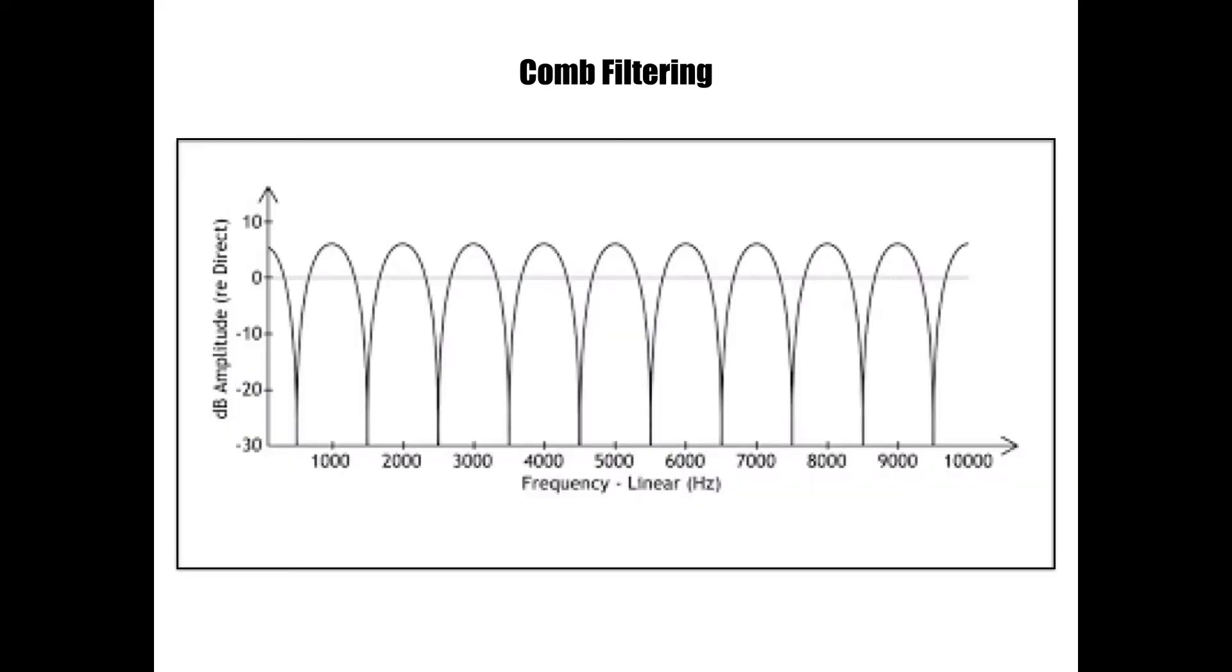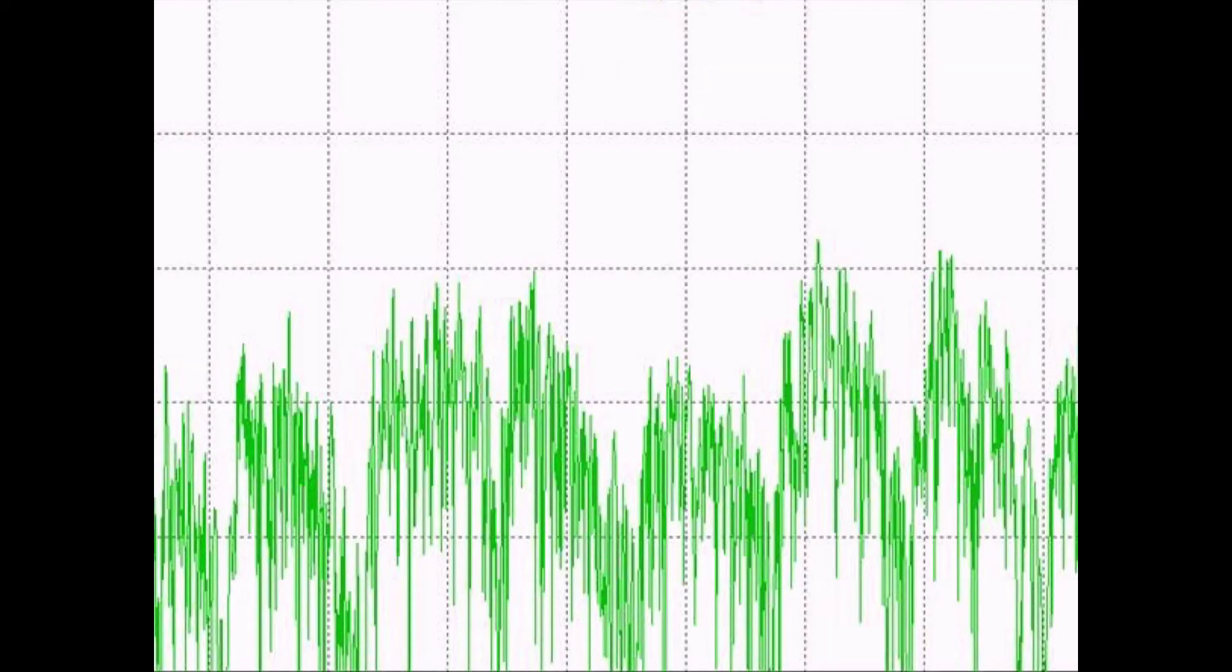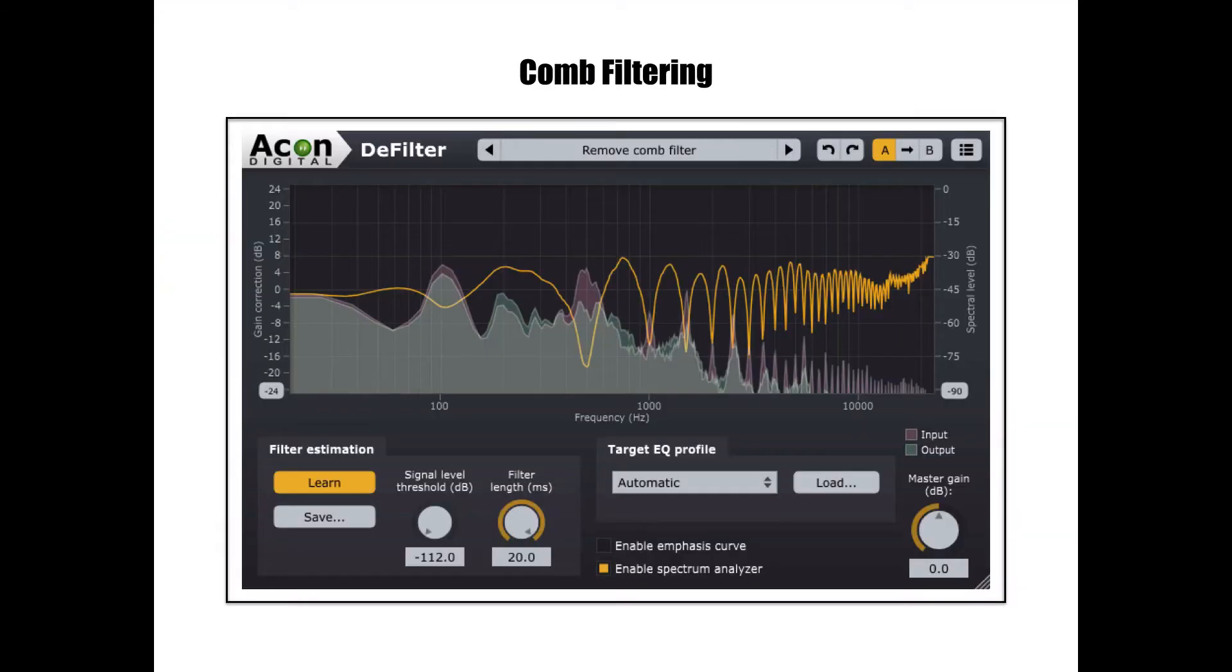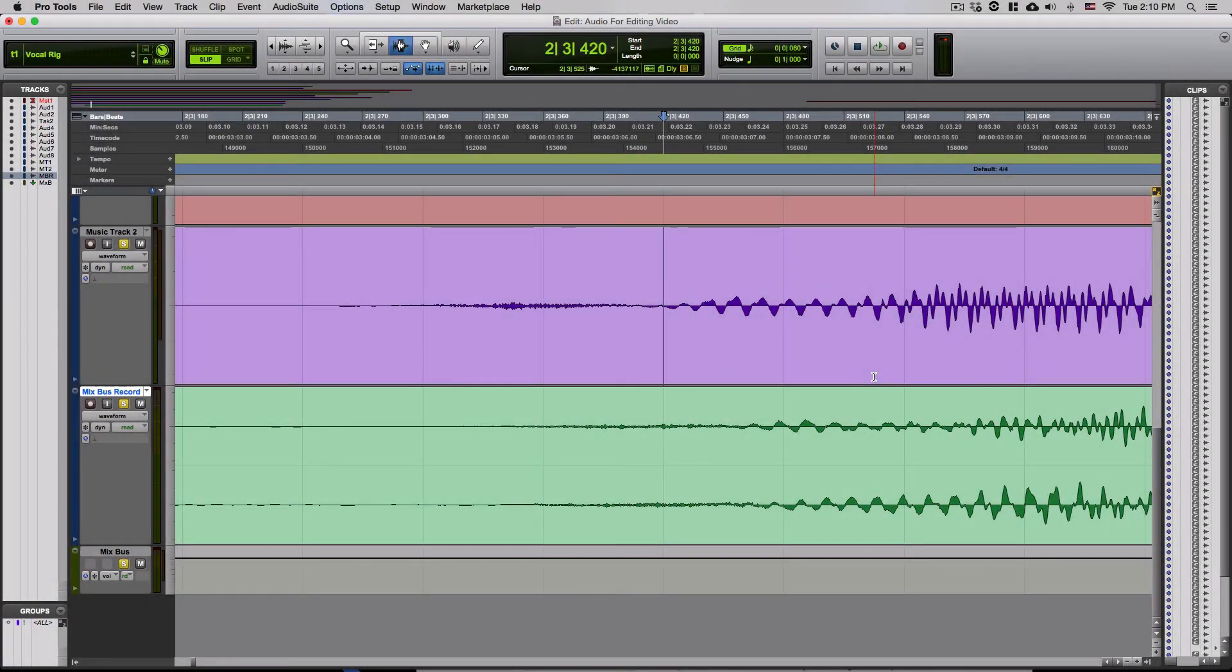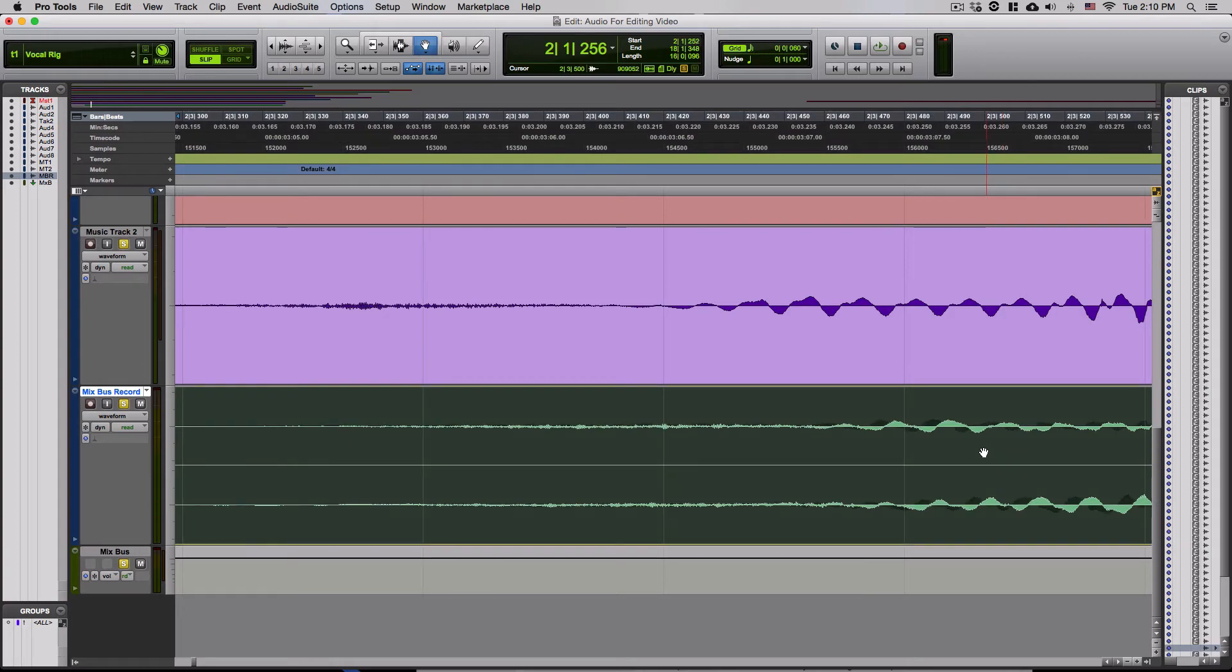One of the biggest issues that occurs from these phase problems is comb filtering. Comb filtering gets its name from its appearance on a frequency response chart. But how and why does this happen? A sound wave is not a perfect sine wave. If you take a musical signal, such as a guitar, that signal is going to be made up of multiple sound waves of different frequencies and amplitudes. So if we take the duplicate of this complex sound wave and delay it so that they are out of phase, all of these different frequencies that make up the sound of the guitar will also be affected. Some of these frequencies will be boosted, some will be attenuated, and that is how we end up with this comb filtering. This is why you should really take every step you can to eliminate any phase issues as it will really help the clarity of your project.